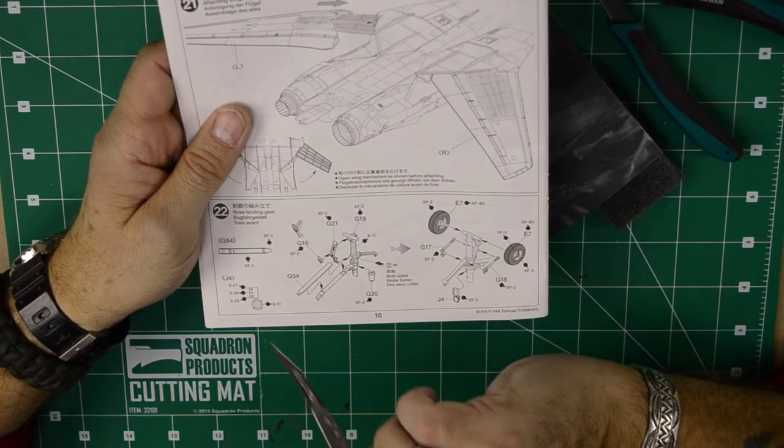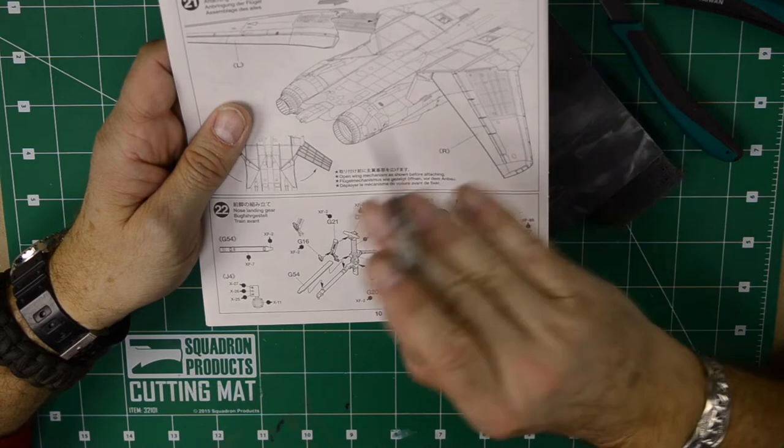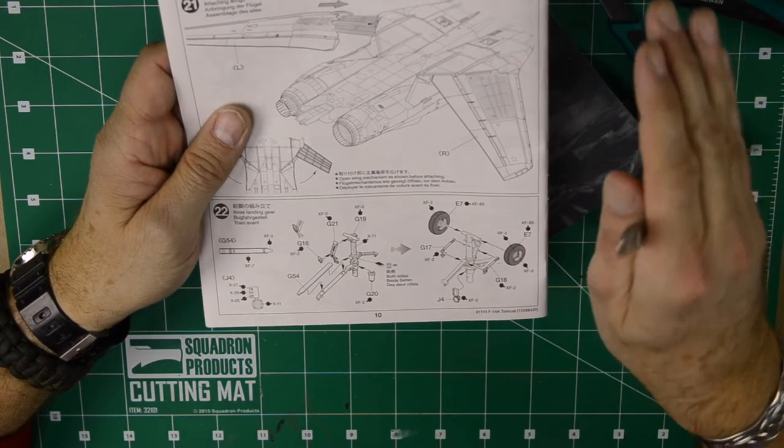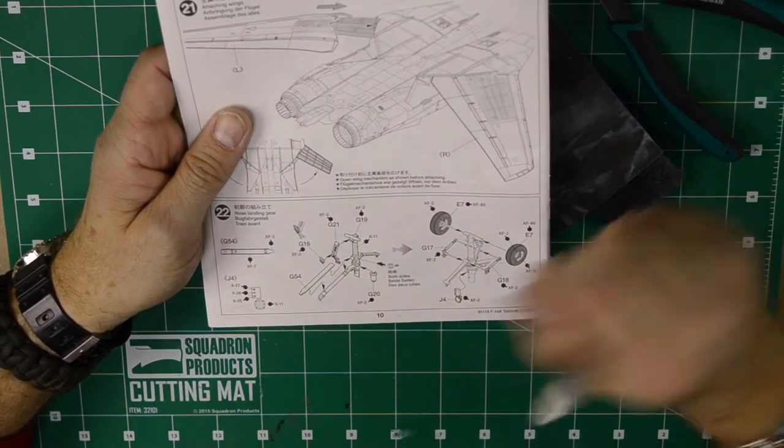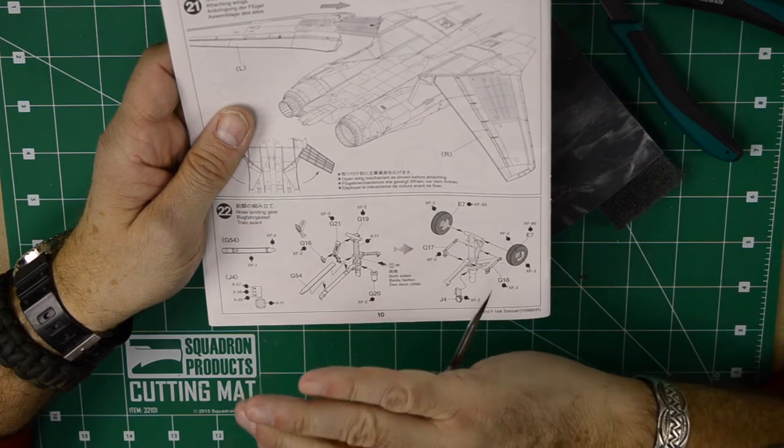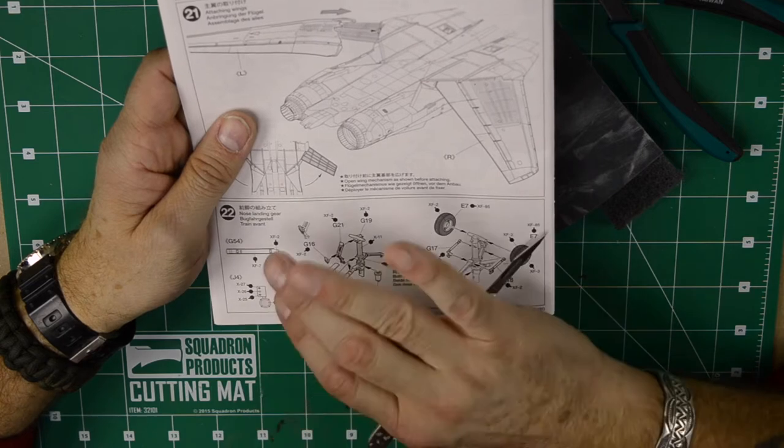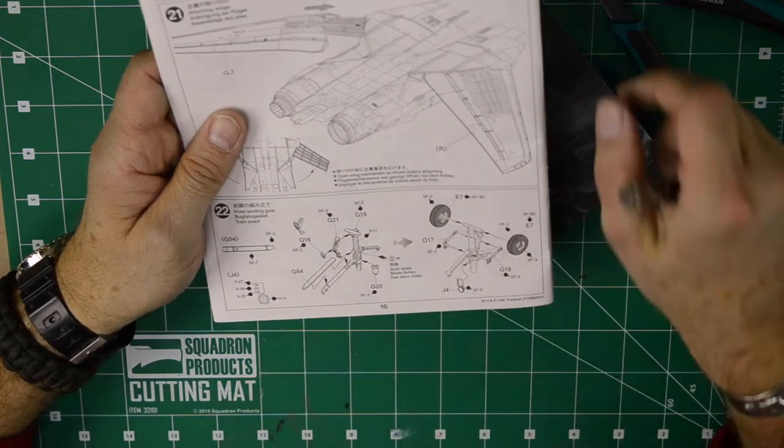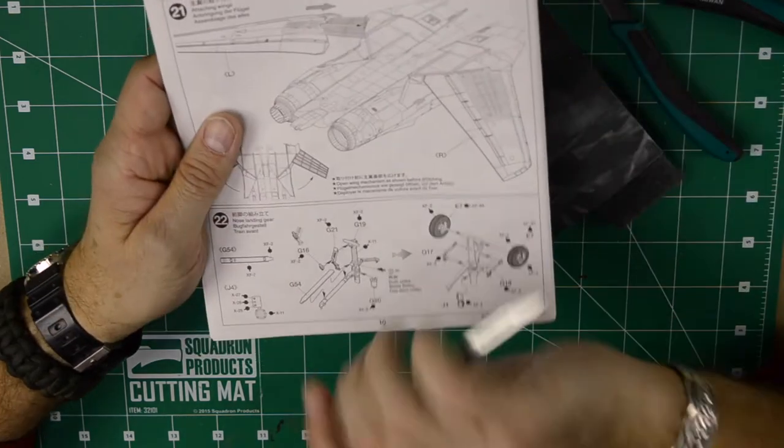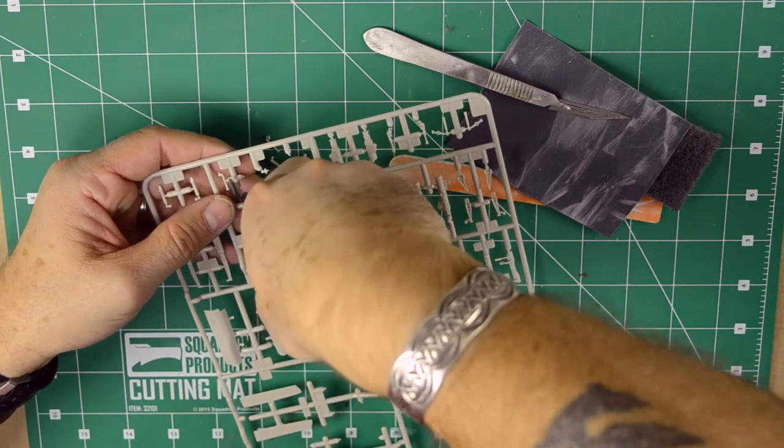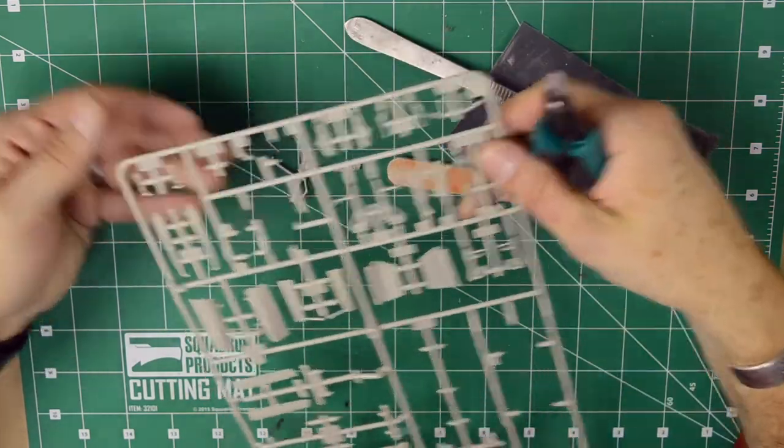Clean this part up and put it in a little container to be glued on later, but for now ignore that. A general rule is don't glue any clear parts if you have to spray paint or airbrush. Keep that aside and only attach it once the painting is done. I just have to glue on a couple more things and then we'll move on to the main landing gear.